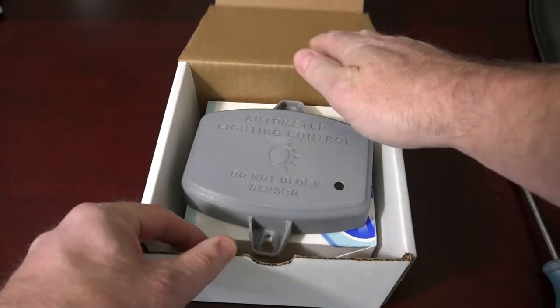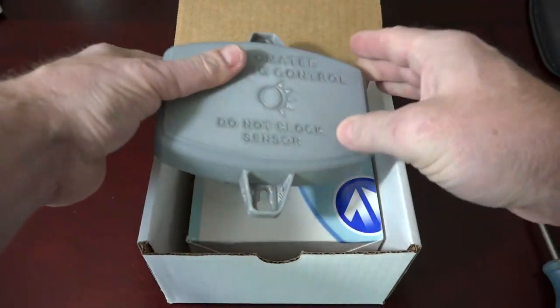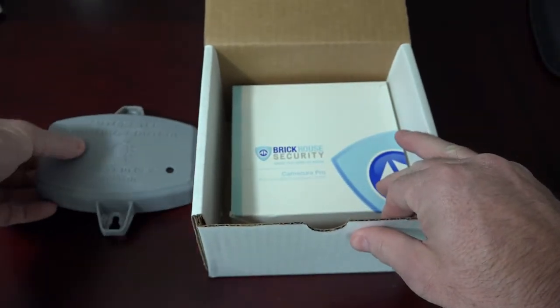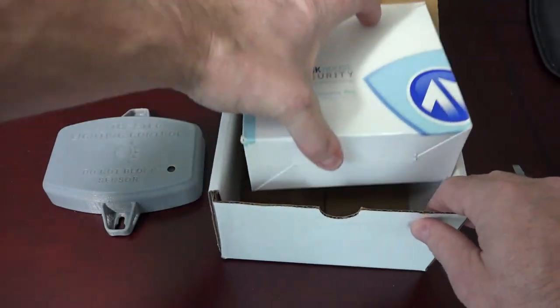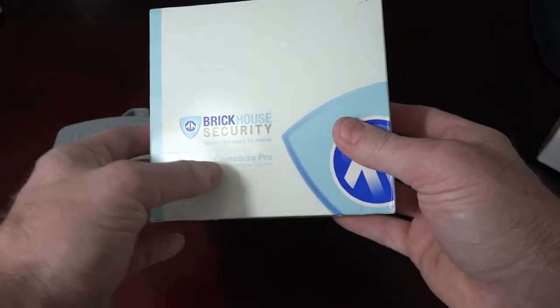Open the box, you'll find the Dissembler standard version, front and back cover, and also the camera itself. This is a BrickHouse Security Kemsura Pro.